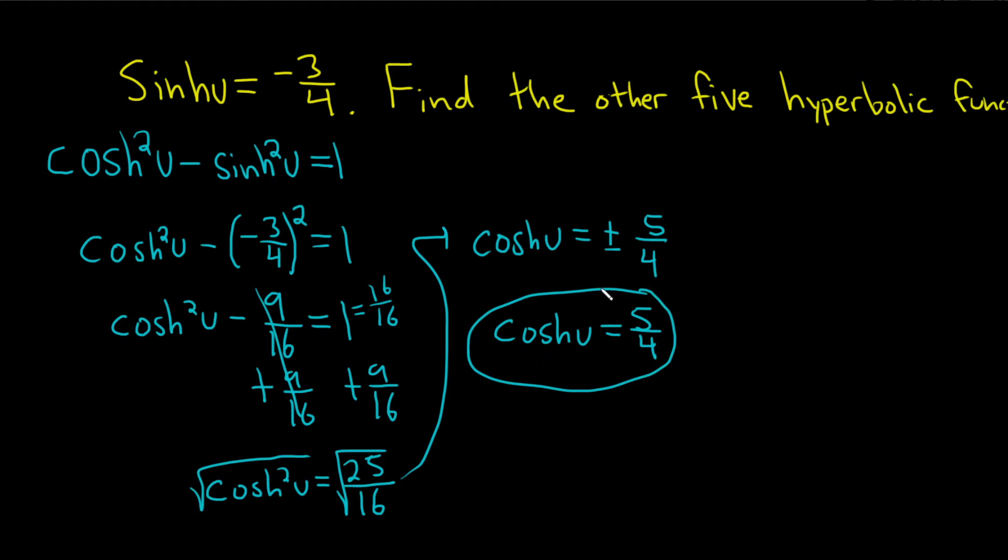So cosh(u) is equal to 5/4. That gives us one of the other ones. If you're not convinced that it's positive, you can think about what cosh(u) is. It's the average of e^u and e^(-u), and you divide it by 2. So it's positive plus positive. Everything's positive here, so this is greater than 0. So there's no way it can be negative.